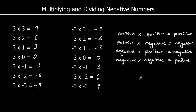The rules for dividing are the same as the rules for multiplying: a positive divided by a positive is positive, a positive divided by a negative is negative, a negative divided by a positive is negative, and a negative divided by a negative is positive.